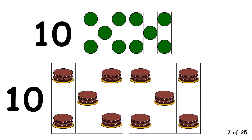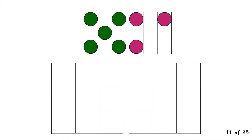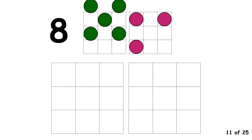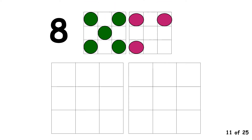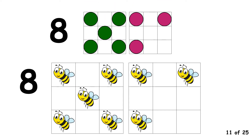OK, for the last bit of practice I'm going to muddle the numbers up. 8. 8 is made with 5 and 3. 8 is made with 5 and 3.